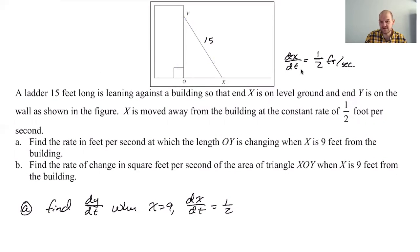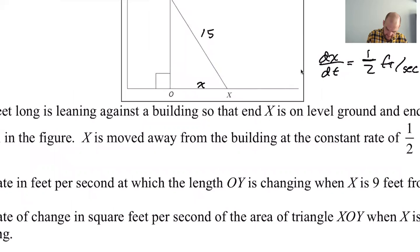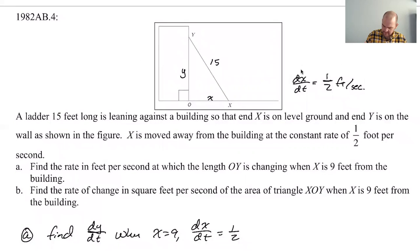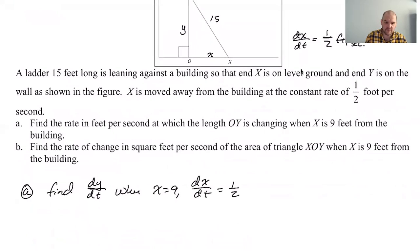I know the ladder is 15, but that can't change. All right. So I'm calling this X and this Y. Which is probably a bad move because there are points named X and Y, but I feel like that's how you're supposed to do the problem. So what are we going to do here?